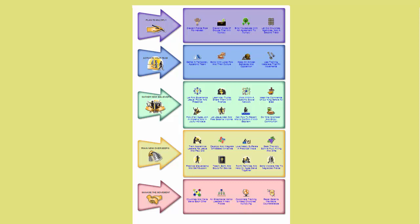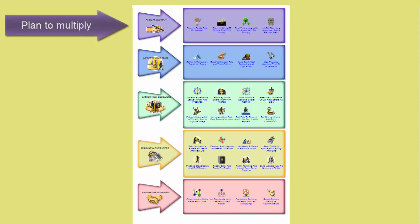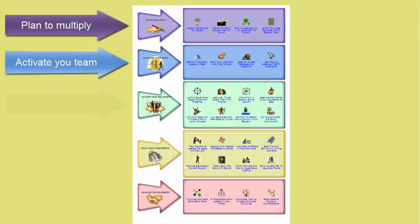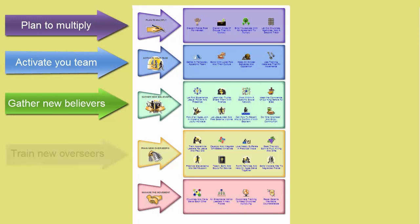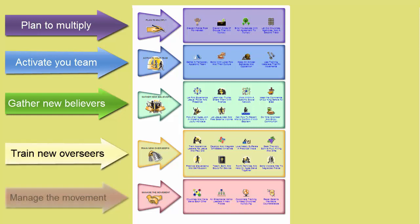We have chosen to call these overlapping phases: plan to multiply, activate your team, gather new believers, train new overseers, and manage the movement.